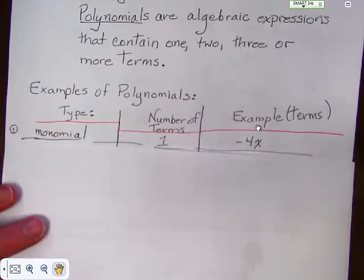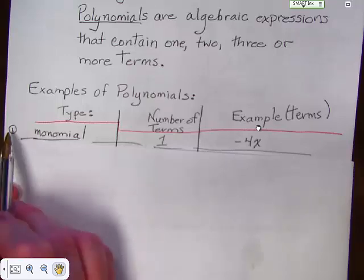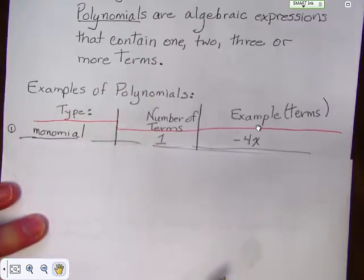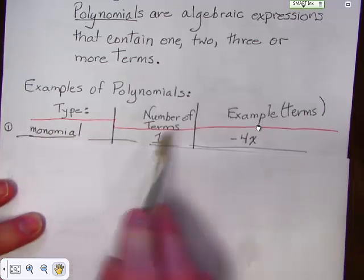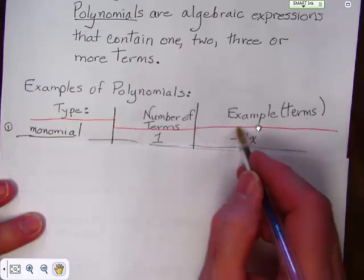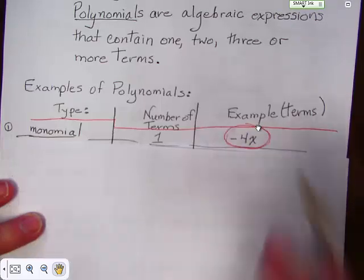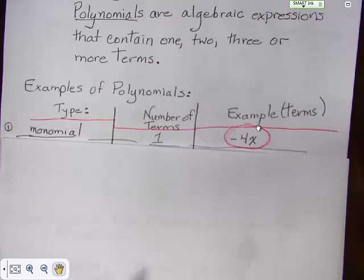So, a monomial. I'll put a little one here next to it because that means one. Mono means one. One term. And if you notice, there's just one term here. Negative 4x. That's it. That's a term.